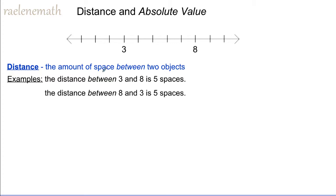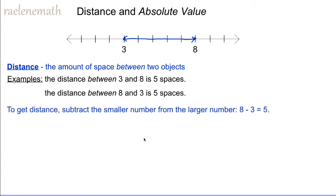Distance is defined as the amount of space between two objects. So if we were to place an object at a position of three on a number line and a position at eight, the distance between them is five spaces. It doesn't matter if we start at three or we start at eight, we get the same distance. To calculate distance, we subtract the smaller number from the larger number, and so eight minus three is equal to five.